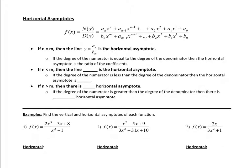The second condition: if n is less than m — if the degree of the numerator is less than the degree of the denominator — then the horizontal asymptote is the line y equals 0. The third condition: if n is greater than m — if the degree of the numerator is greater than the degree of the denominator — then there is no horizontal asymptote.